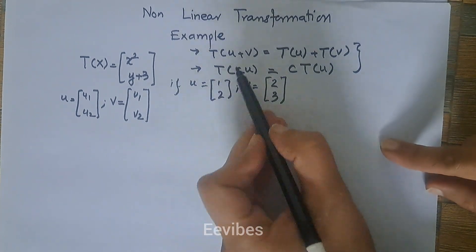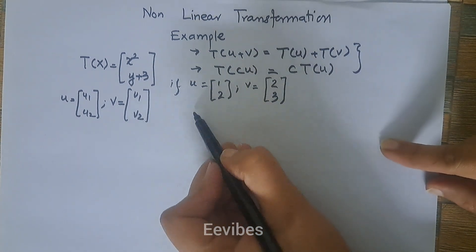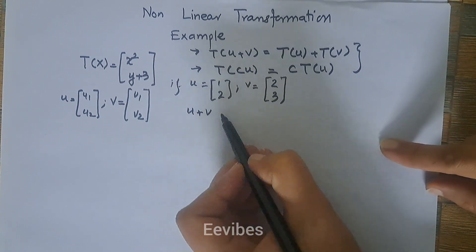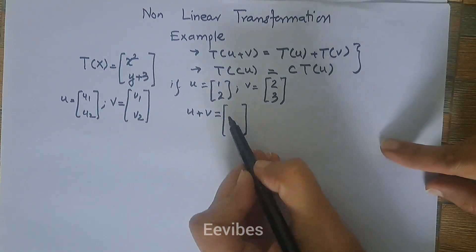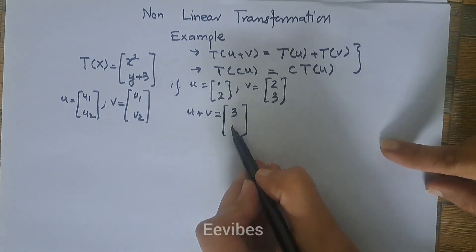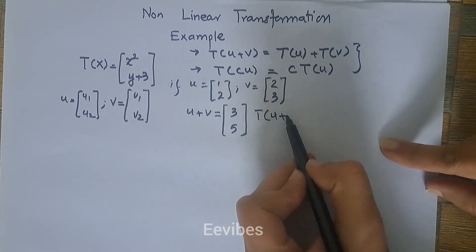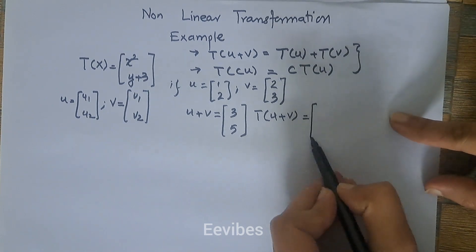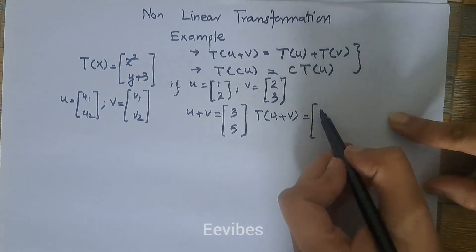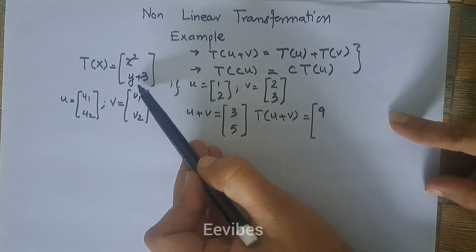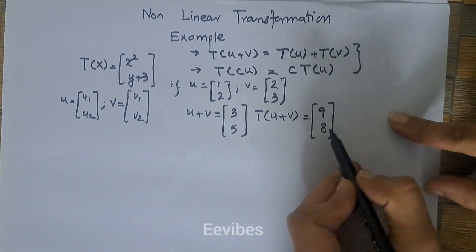Let's apply the left-hand side first. The first rule says find the addition of u and v, then apply the transformation. Adding the corresponding components: 1+2=3 and 2+3=5, so u+v = (3, 5). Applying the transformation: the x component is squared, so 3² = 9, while the y component is incremented by 3, so 5+3 = 8. The left-hand side gives T(u+v) = (9, 8).